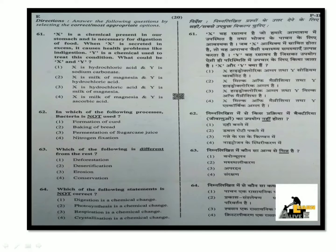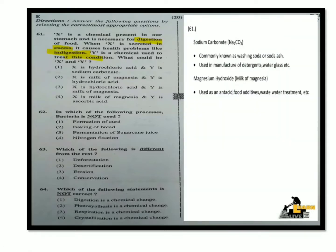First question: X is a chemical present in our stomach and is necessary for the digestion of food. When X is secreted in excess, it causes health problems like indigestion. Y is a chemical used to treat this condition. What could be X and Y? We need to identify the chemical as hydrochloric acid, so we can eliminate options 2 and 4. If we have hydrochloric acid, it is excess acid, and we need to neutralize it. The base is milk of magnesia. So the answer is: X is hydrochloric acid and Y is milk of magnesia.